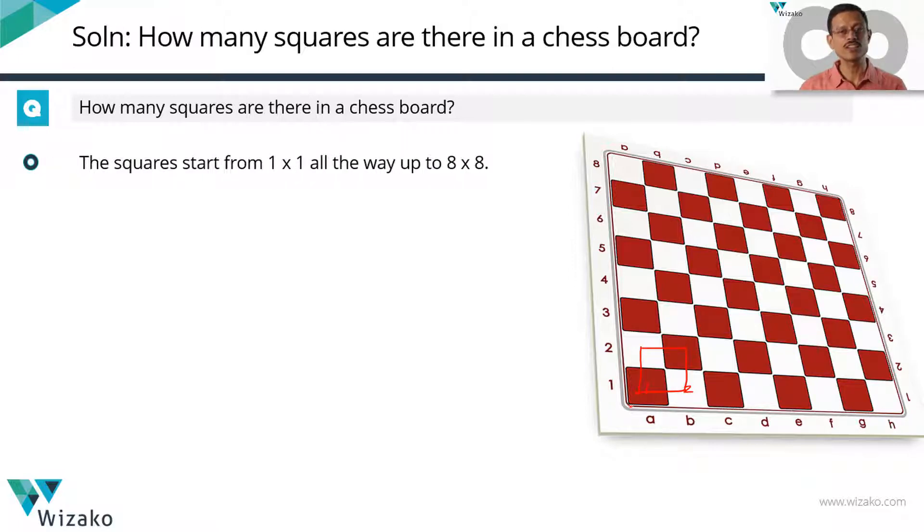We need to count squares all the way from these unit squares, 1 by 1 squares up to 8 by 8 squares. It's not just 1 by 1 and 8 by 8. How many 2 by 2s are there? How many 3 by 3s are there? So on and so forth. Let's get started. Let's start with the 1 by 1. That's the easiest one. How many of them are there? There are 8 across the width, 8 along the length. Therefore, it's 8 by 8, 64 squares. This is known to us. So this is done.